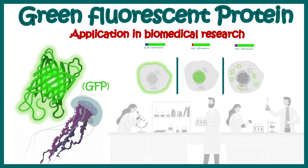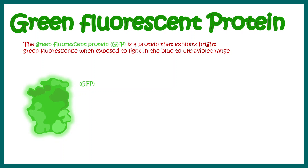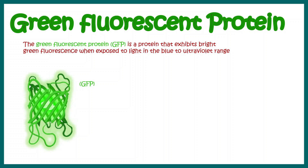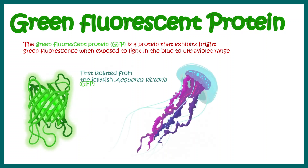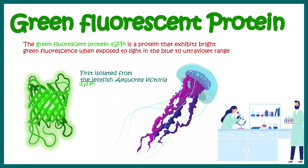Hello, in this video we'll talk about green fluorescence protein and its application in biomedical research. Green fluorescence protein, or GFP, is a protein that exhibits bright green fluorescence when exposed to blue or ultraviolet light. It has a beta-barrel-like structure and was discovered from the jellyfish Aequorea victoria. It is now a pillar of biomedical research, especially for people working with cell biology and molecular biology.